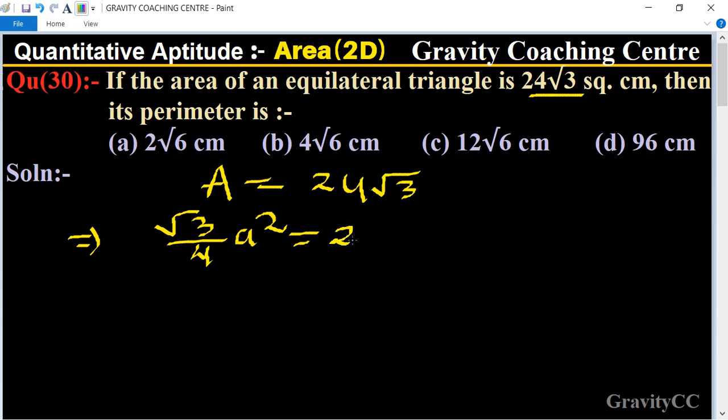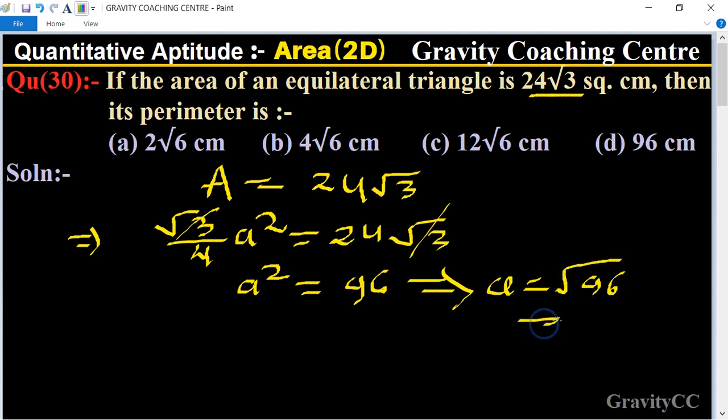24√3. √3, √3 cancel. a² equals 96, implies that a equals √96, equals 4√6. So therefore...